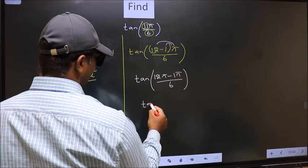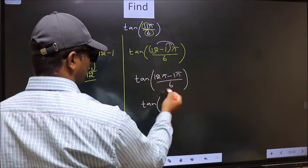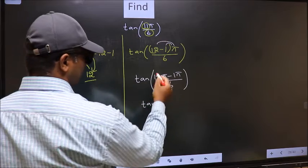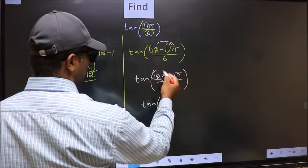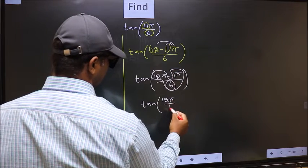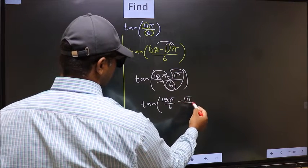Now, tan over here, you should split the denominator in this way. That is 12π by 6 minus 1π by 6.